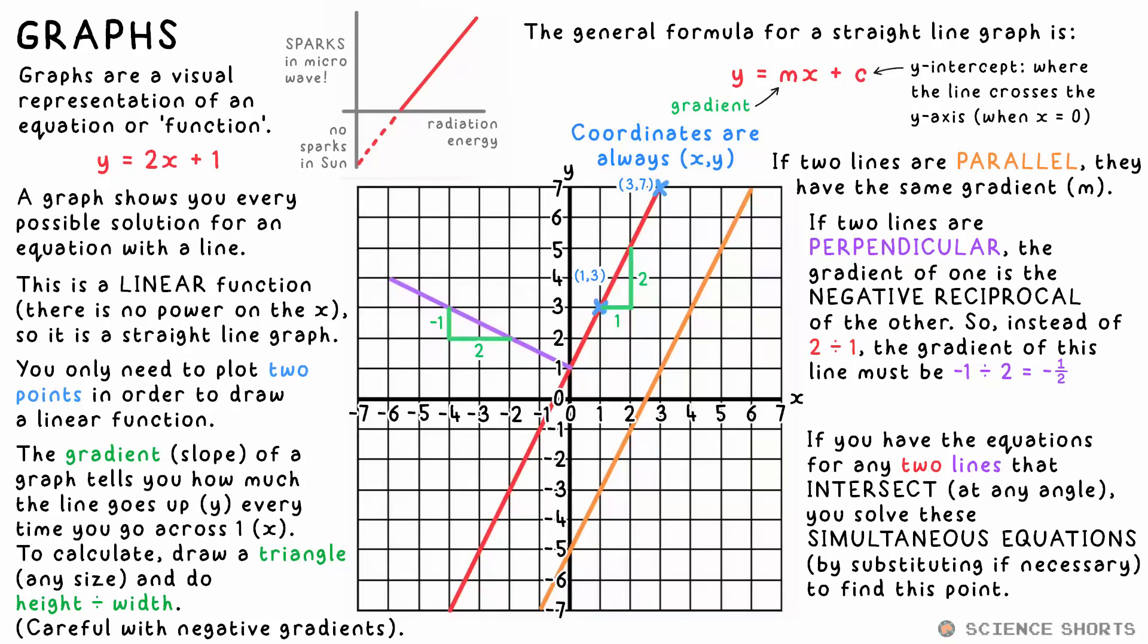The gradient of this line is a half instead. Well, technically, minus a half or negative half, isn't it? Because the slope is in the opposite direction.